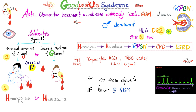Goodpasture syndrome — everything here is 2. Associated with HLA-DR2 (class 2 MHC), and it's male-dominant. The patient has two problems: antibodies against the basement membrane of the alveoli and the glomeruli. That's why you get hemoptysis followed by hematuria — two pathologies, two symptoms. The problem is collagen type 4. Treatment: four methods — plasma exchange to wash out antibodies, immunosuppressants, dialysis for kidney failure, and kidney transplant.